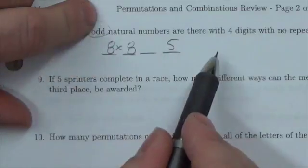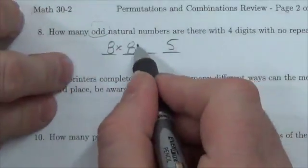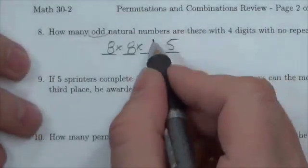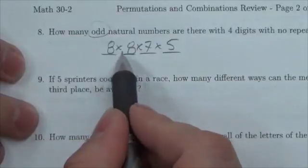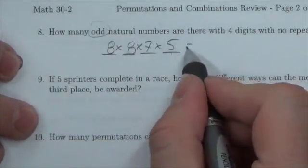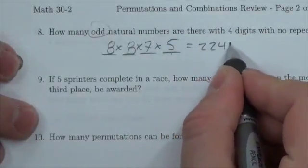Now here, for this one right here, it turns out there are seven options because there are three that have been removed from my list that I can choose from. And so that's how you fill that one out. When you multiply that all out, you'll get two thousand two hundred forty.